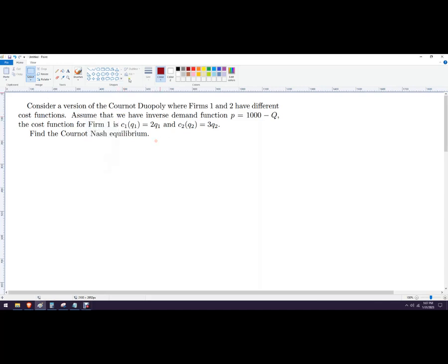A couple of things to note initially. We've been given an inverse demand function here. Big Q is going to equal Q1, which is the quantity of firm 1, plus the quantity of firm 2.